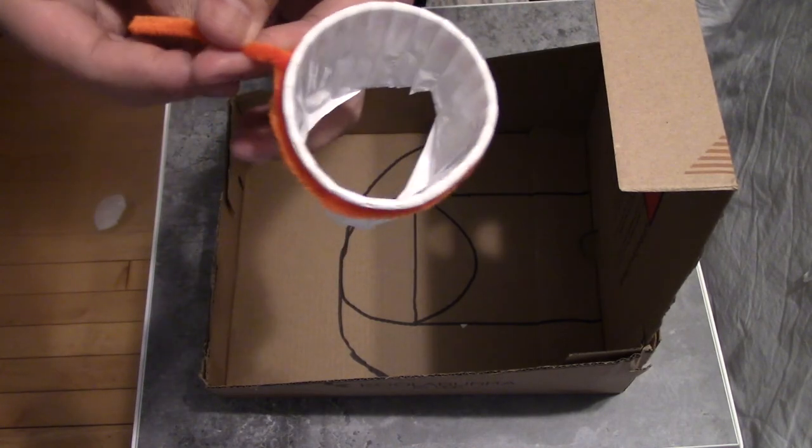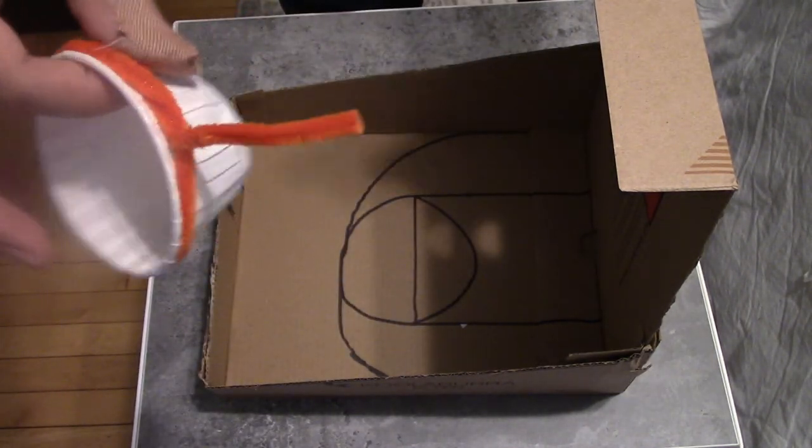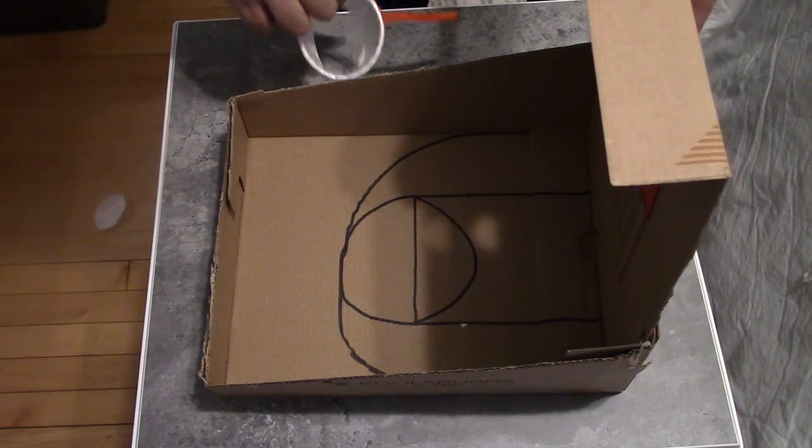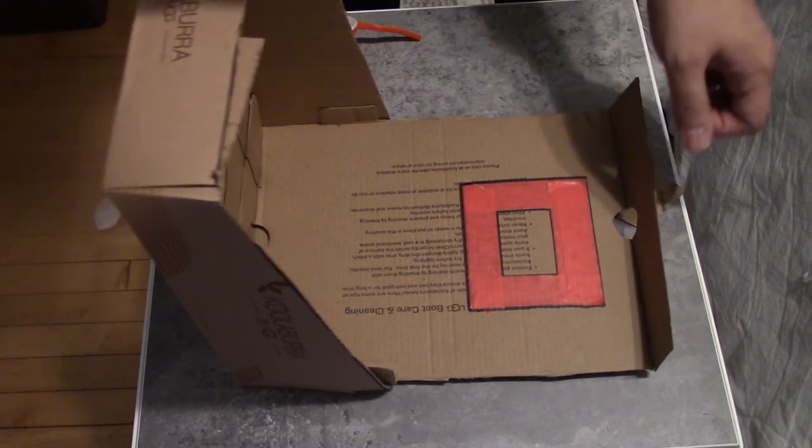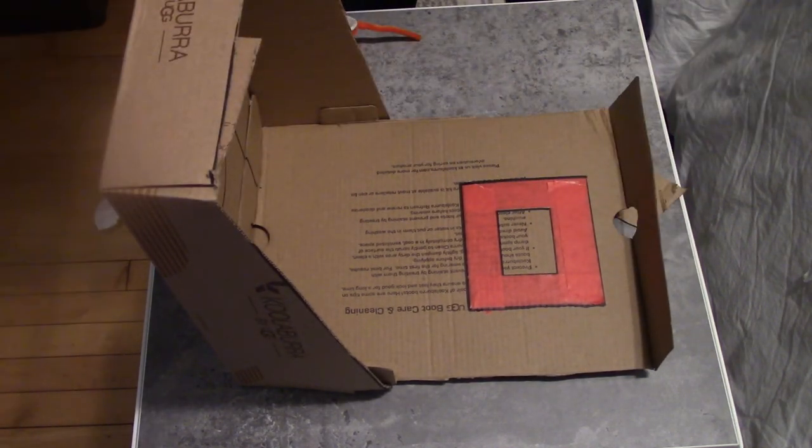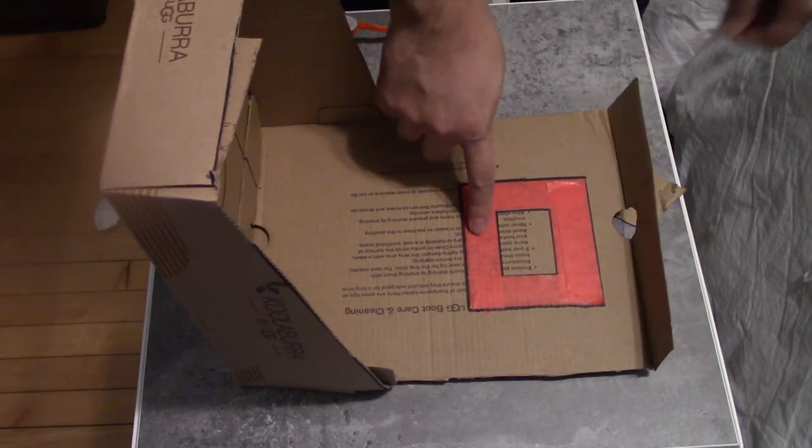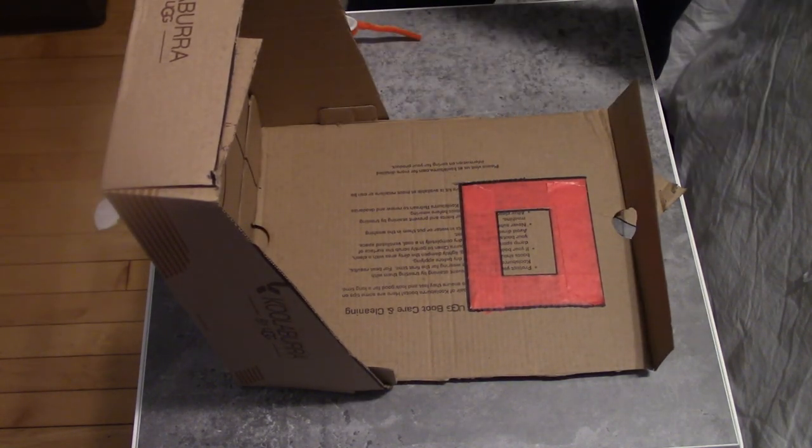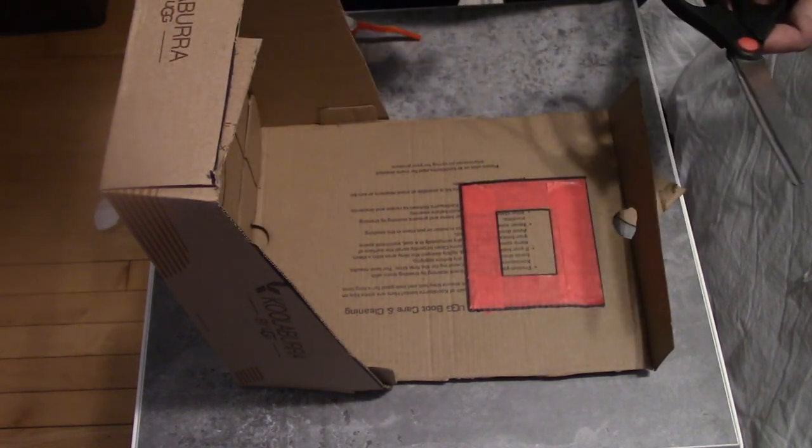Okay, now that I have my hoop and the pipe cleaner is connected to it, I can go ahead and connect it to the backboard here. So I'm going to lay my basketball court down here and I'm going to make a hole right below this square here.